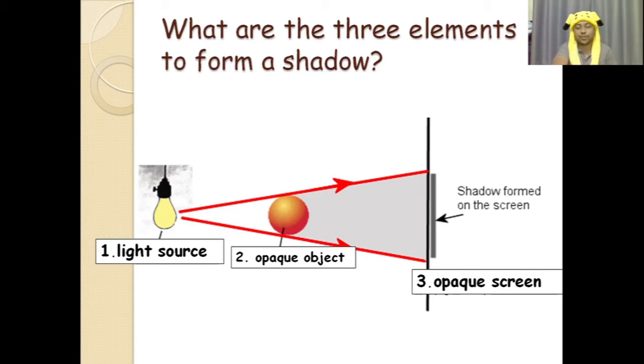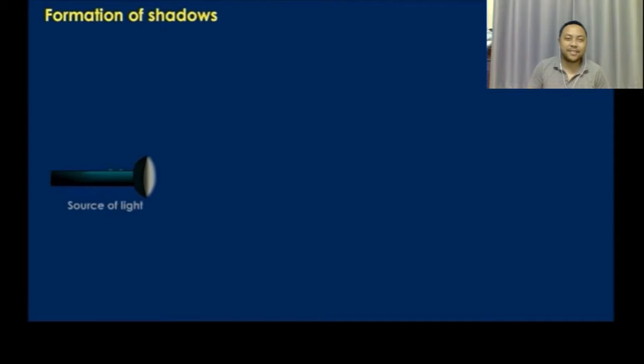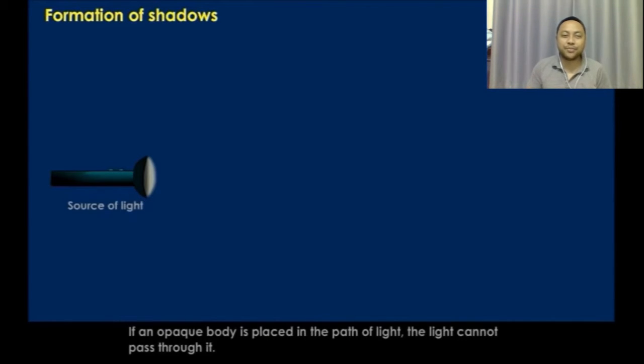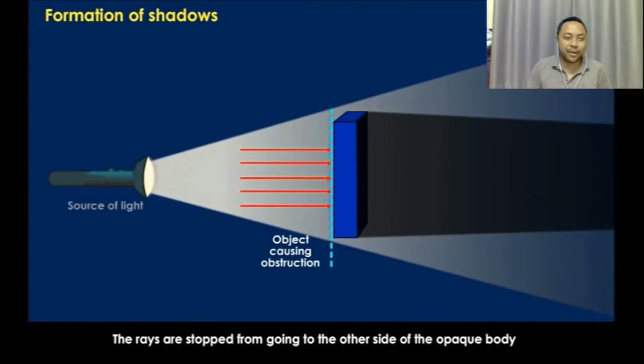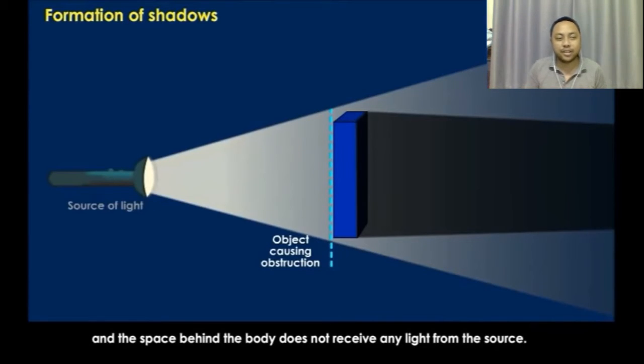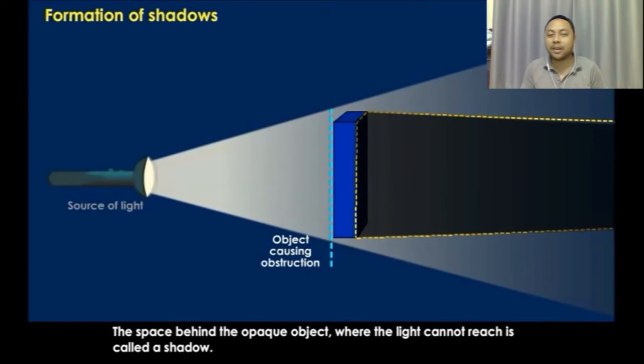Formation of shadows: Let us see how a shadow is formed. If an opaque body is placed in the path of light, the light cannot pass through it. The rays are stopped from going to the other side of the opaque body, and the space behind the body does not receive any light from the source. The space behind the opaque object where the light cannot reach is called a shadow.